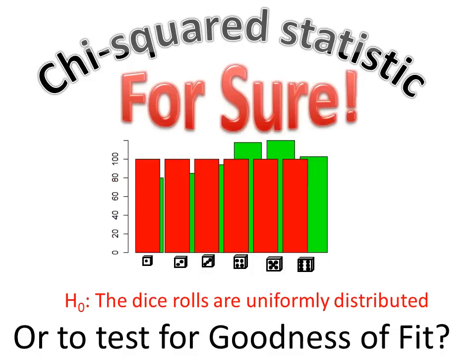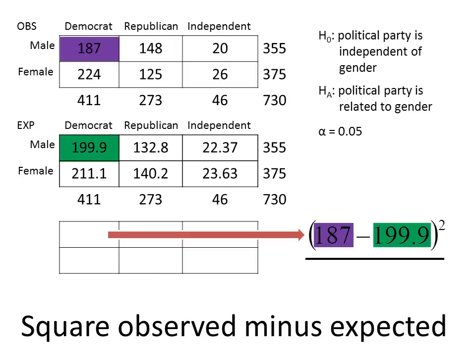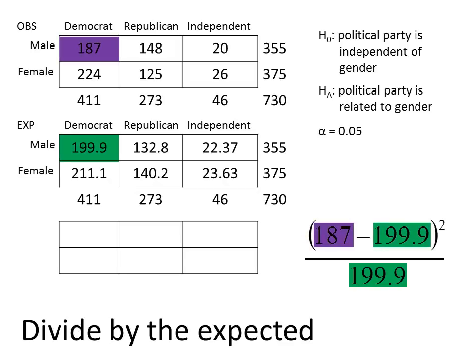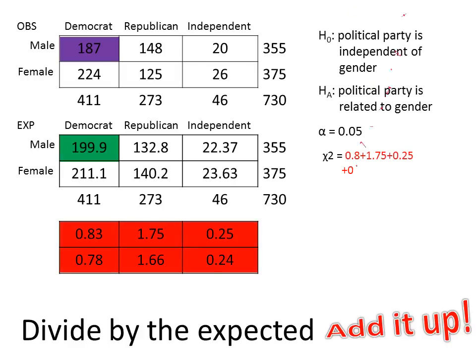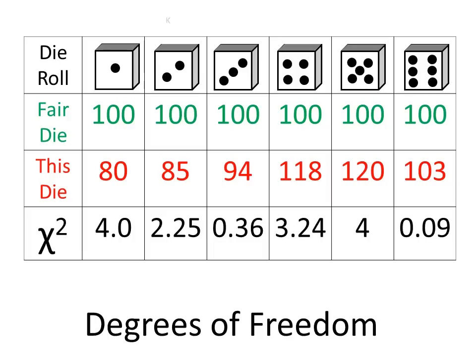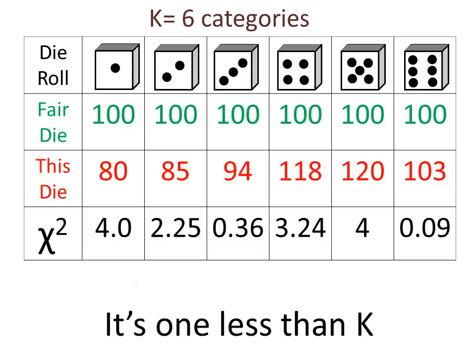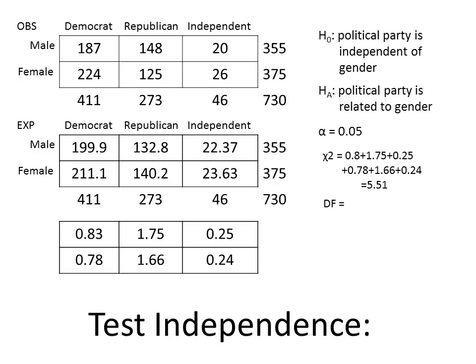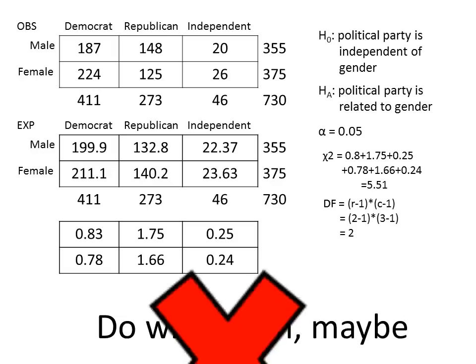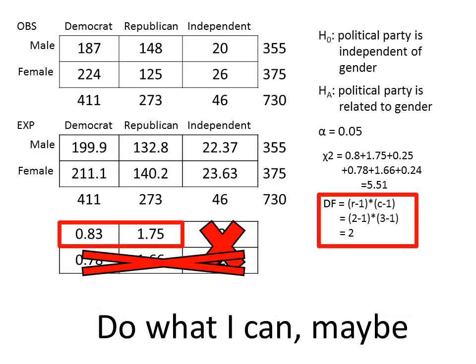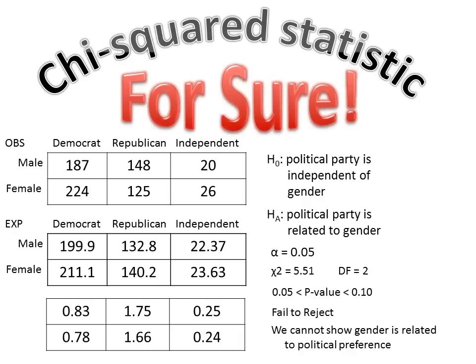Or are you testing a goodness of fit? Well, sir — observed minus the expected, divide by the expected, add it up. Degrees of freedom, it's one less than K. Testing independence, the degrees of freedom is this way. Do what I can, maybe, kind of squared statistic, for sure.